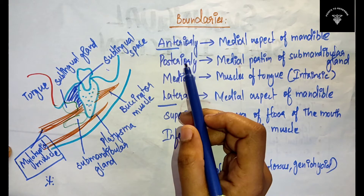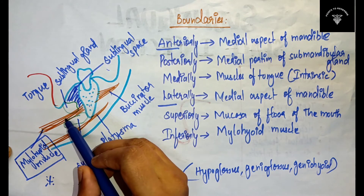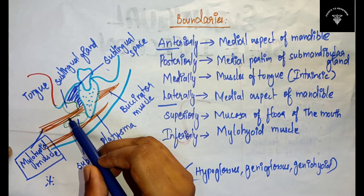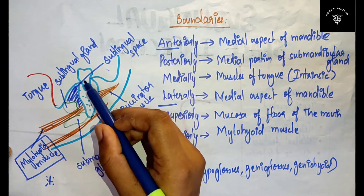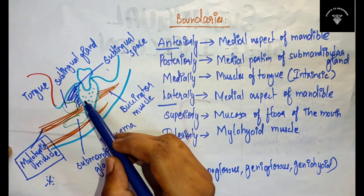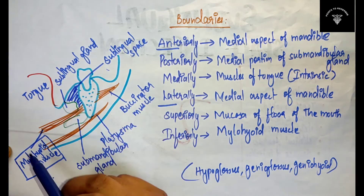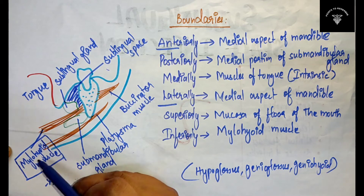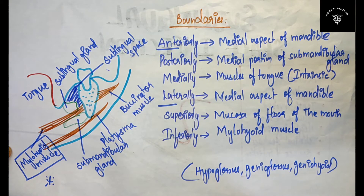To summarize the boundaries: anteriorly you will have the medial aspect of mandible; posteriorly the medial, superior, and posterior portion of the submandibular gland; medially the intrinsic muscles of tongue — hypoglossus, genioglossus, and geniohyoid; laterally the medial aspect of mandible; superiorly the mucosa of the floor of the mouth; and inferiorly the mylohyoid muscle.